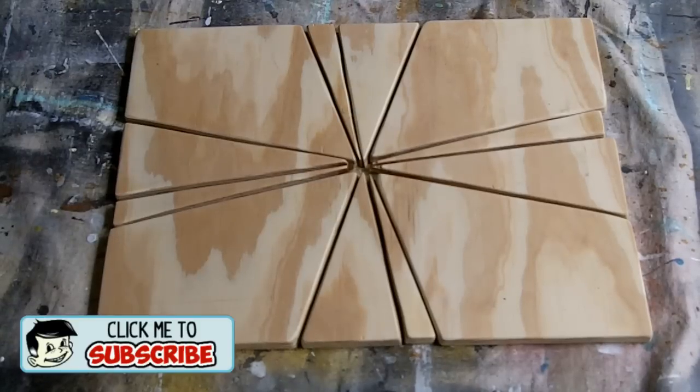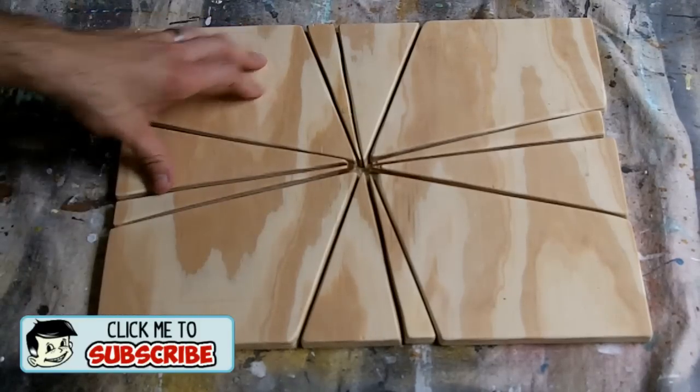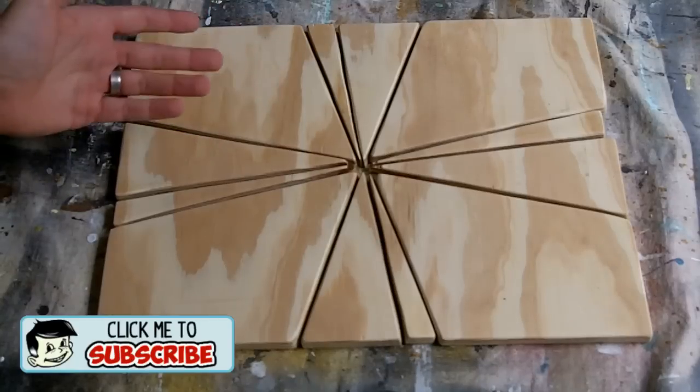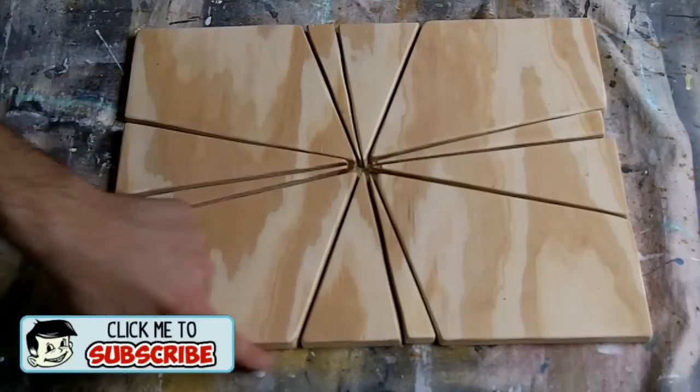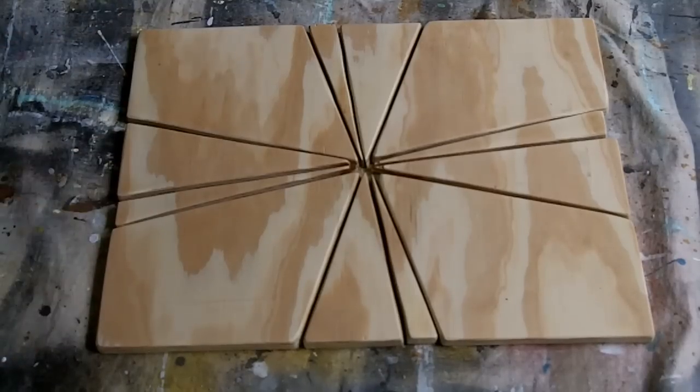Alright, so to start off I just want to show you what this little project I'm working on looks like in its raw state. This is just straight up half inch plywood that I drew a pattern, cut all the pieces out, sanded them smooth and slightly rounded off the edges a little bit just to bring them up a notch, make them look a little nicer.